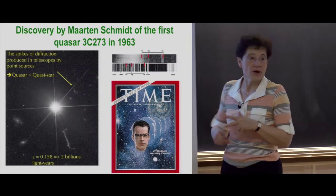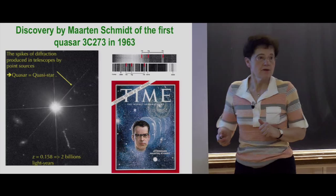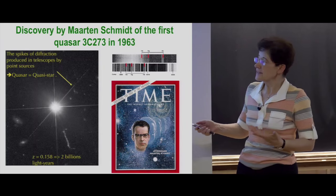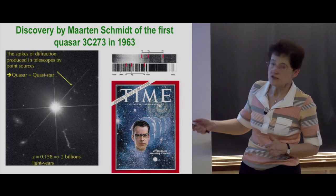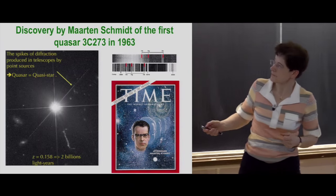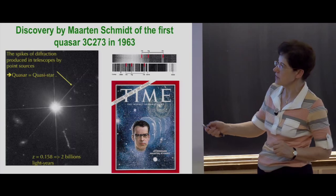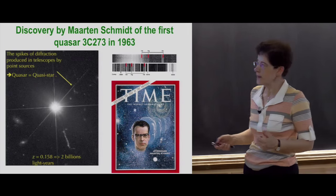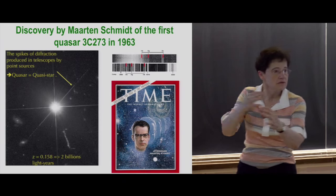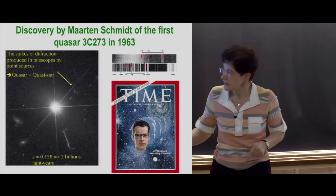We know black holes are the brightest objects in the universe. In 1963, Martin Schmidt made the cover of Time magazine when he discovered a quasar — it looked like a star, which is why it's called a quasi-star. When you make a spectrum of this star, all the lines are redshifted with respect to the rest frequency by a large amount. The redshift Z, called delta lambda over lambda, was 0.15, which corresponds to 2 billion light years away. But now we go to Z equals 6 or more to find quasars.